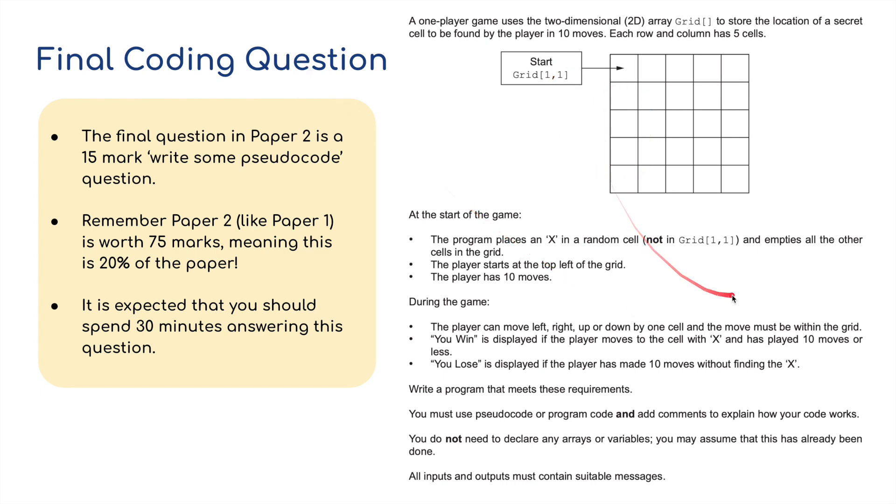Final coding question. What you've got to remember with these questions is they used to be scenario questions, but now they're worth 15 marks. Paper 2 is worth 75 marks, so this question alone is worth 20% of the paper. It is generally deemed the hardest task and takes the longest time. It usually takes around 30 minutes, or you should give yourself at least 30 minutes to complete this task.